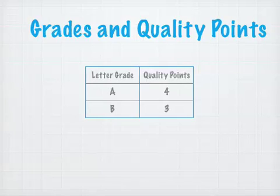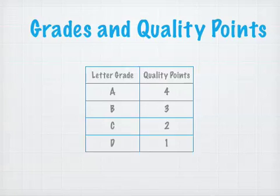A grade of B, three quality points. A grade of C, two quality points. A grade of D, one quality point. A grade of F receives no quality points.